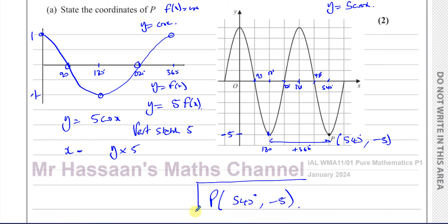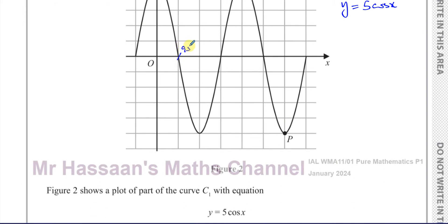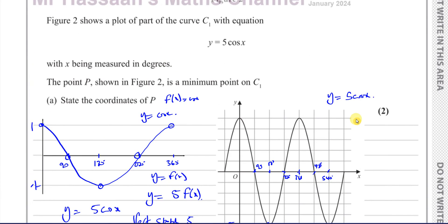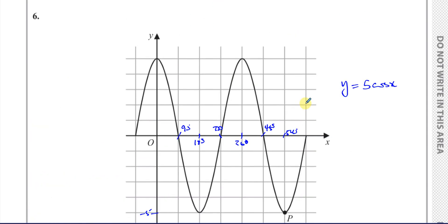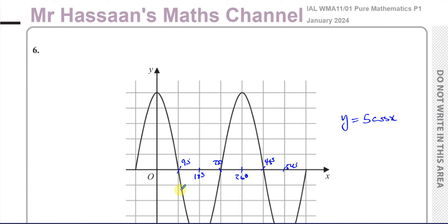That's the answer. It says 'state' so you don't really have to show steps. Marking the angles on the diagram — 90, 180, 270, 360, 450, 540 — would be useful, and you can see this is −5. That's Part A: a pretty simple transformations of trig functions question. You have to know how your trig functions look and what happens when you multiply the whole thing by 5.